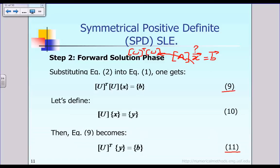From equation 9, the product of the matrix U times vector x, we give it a new name — we call it vector y. With that notation introduced, equation 9 becomes equation 11. U-transpose is still there, the product of U times x is called vector y, and vector b is still on the right-hand side.